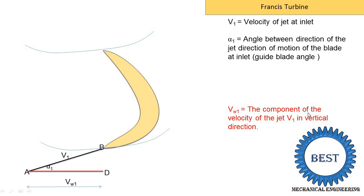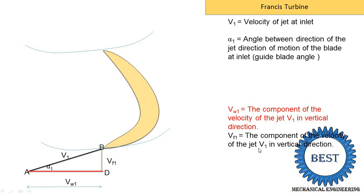Another component is the vertical component DT, denoted as velocity of flow VF1 — V means velocity, F means flow. For inlet it is indicated as 1. VF1 is the component of velocity of jet V1 in the vertical direction, and VW1 is the horizontal component. So V1 is divided into two parts. Now we add another two velocities: the velocity of the blade at inlet U1 and the relative velocity. We indicate the velocity of the blade — here the blade is moving in the horizontal direction. On the line AD up to a certain point C, we indicate the velocity of the blade. This AC indicates the velocity of the blade U1.